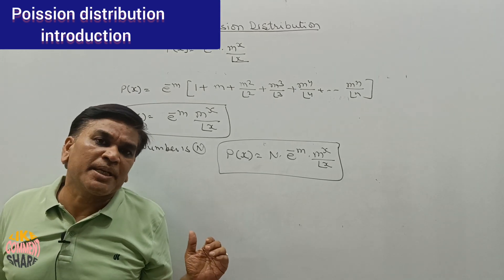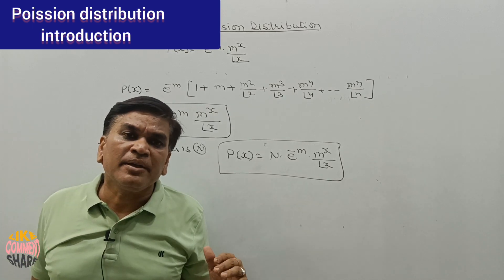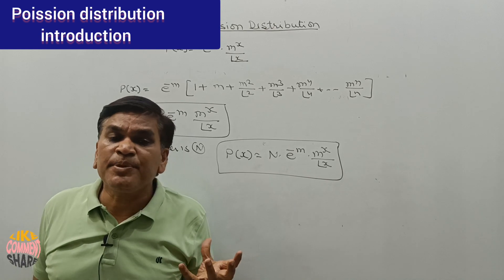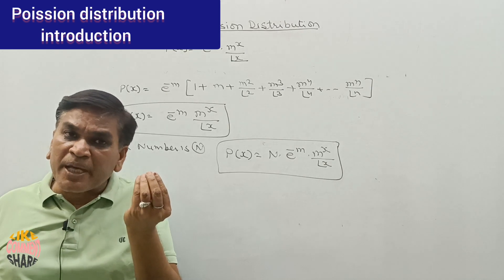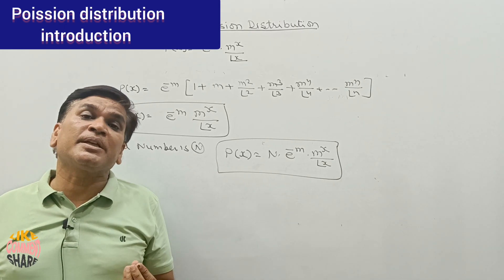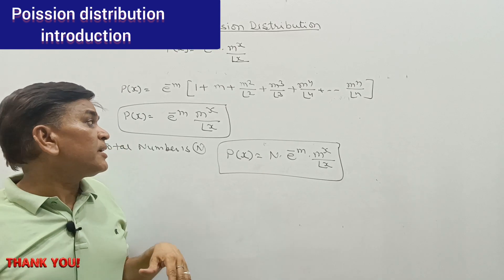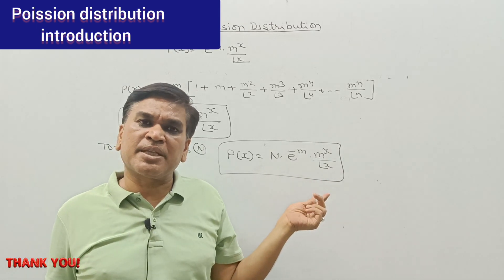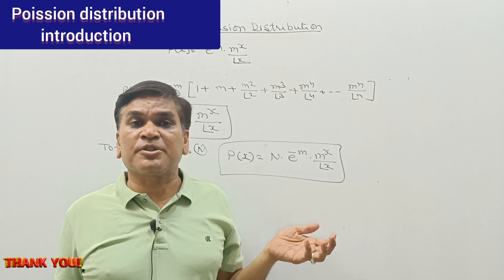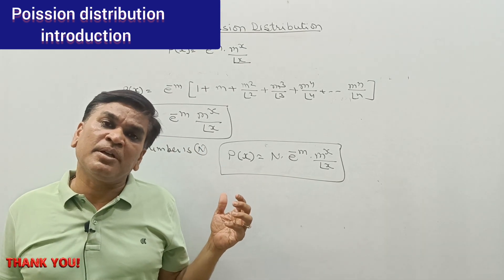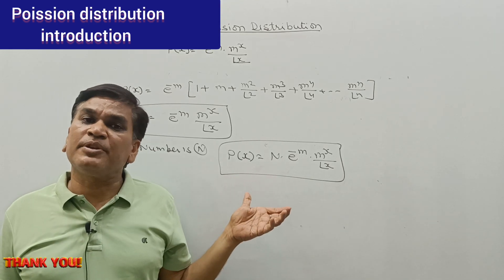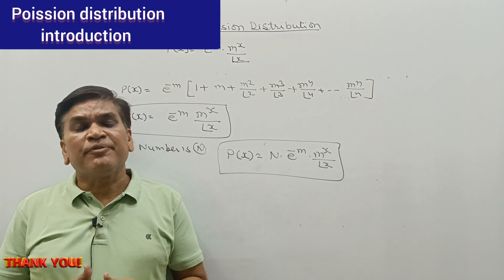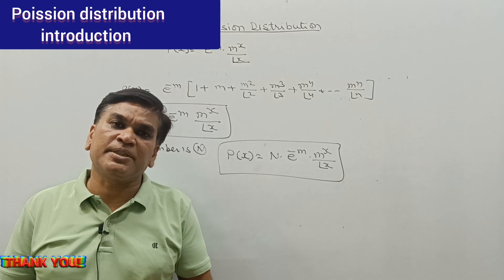With the help of this video, we may calculate using the Poisson distribution when the occurrence of an event is very low and non-occurrence is very high. Whenever we have a question on Poisson distribution, we will use the formula P(x) equals e raised to power minus m times m raised to power x divided by factorial x. In the next video, we will solve some questions using this formula. Thank you for watching.